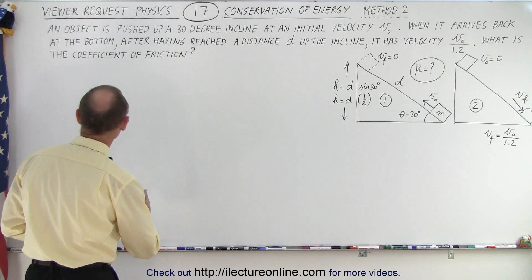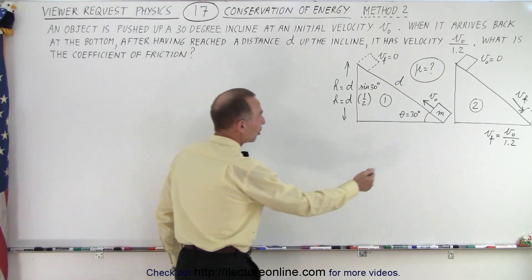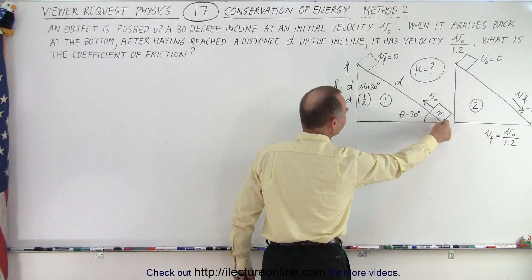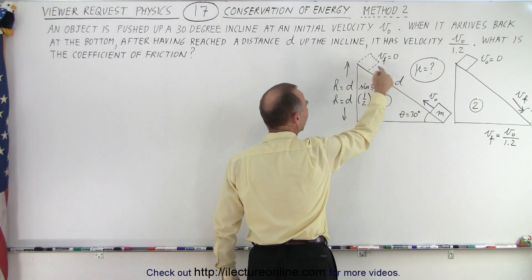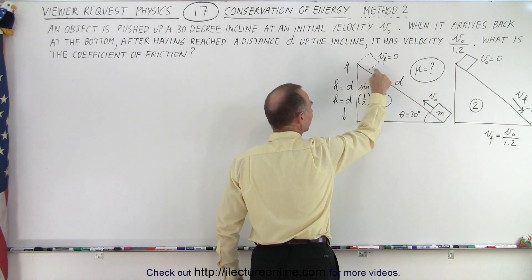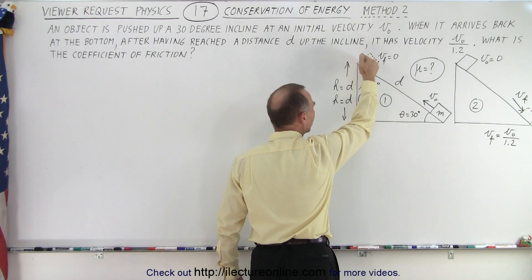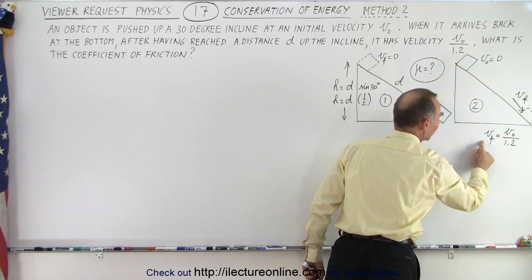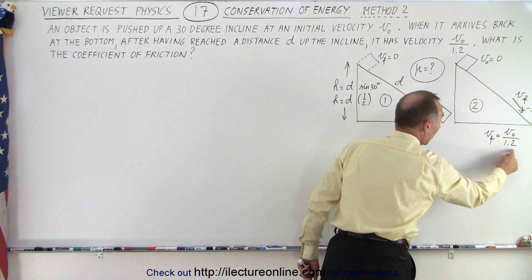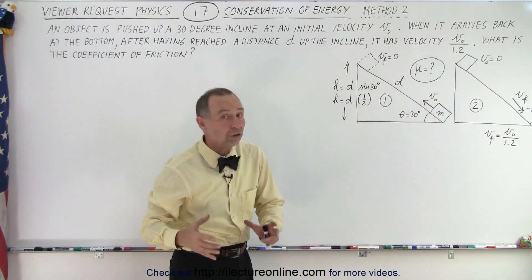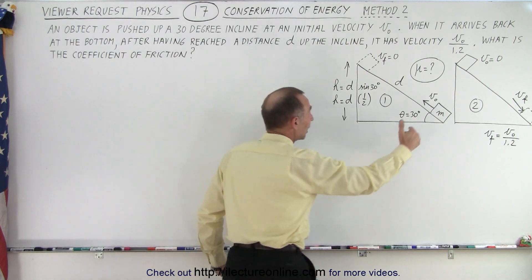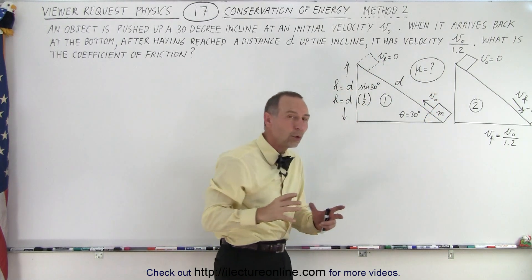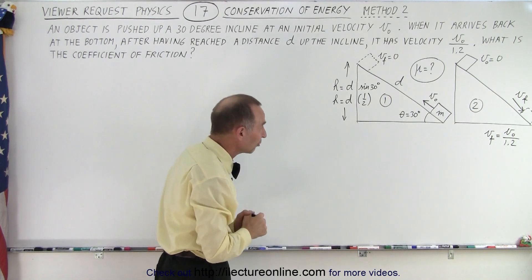Let's read the problem again, just so we're in tune with the problem. An object is being pushed up a 30 degree incline with an initial velocity V sub naught. It will reach the very top after traveling distance d. The velocity there will be zero. Then it will slide back down. When it gets back down to the bottom, the final velocity is the initial velocity divided by 1.2, because it has lost some energy overcoming the friction on the incline. There is a coefficient of friction, and that's the goal — to find out what that coefficient of friction is.